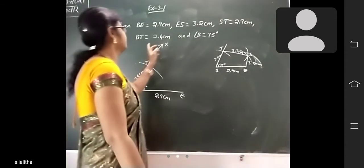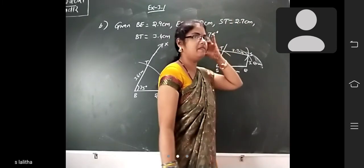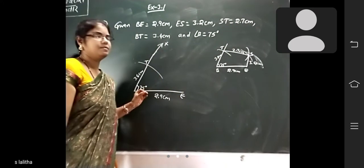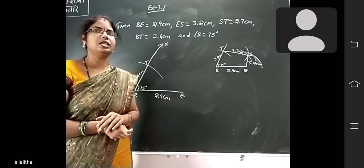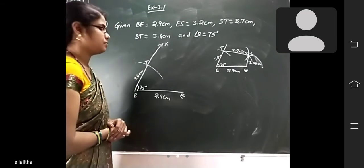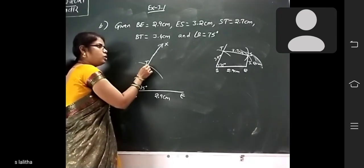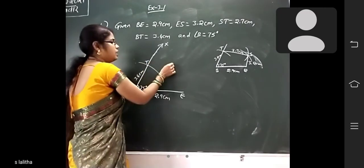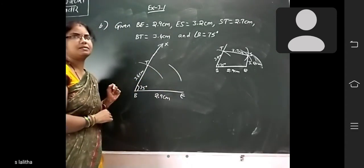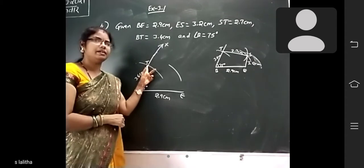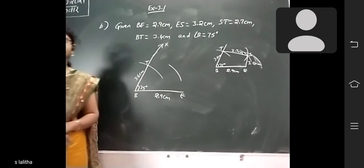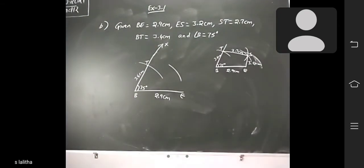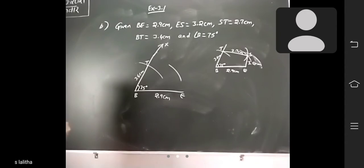Next, TS = 2.7 cm. Take the compass, measure 2.7 cm on the scale. Keep it on T and draw an arc of 2.7 cm.